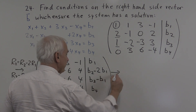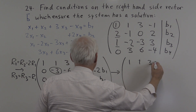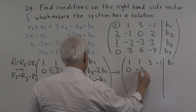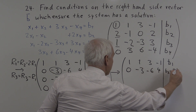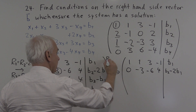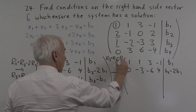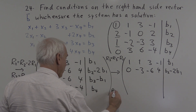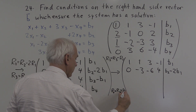So we're going to get: row 1 stays as 1, 1, 3, minus 1, b1. Row 2 stays as 0, minus 3, minus 6, 4, and b2 minus 2b1. Now, row 3 is going to be equal to row 3 minus row 2. And row 4 will be row 4 plus row 2.